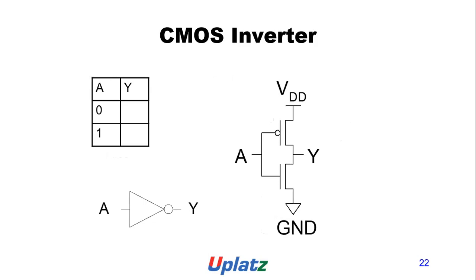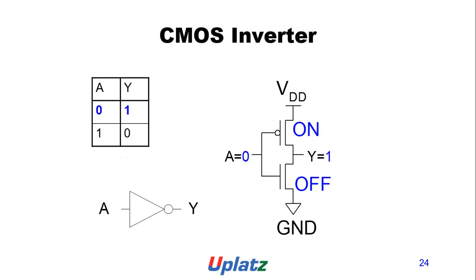CMOS inverter: A is the input, Y is the output. The transistors and symbols are shown. When A is 1, the NMOS is on and PMOS is off, so Y equals 0. When A equals 0, Y equals 1.